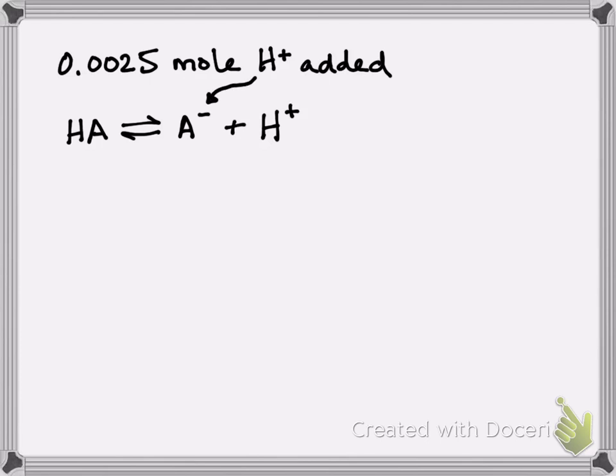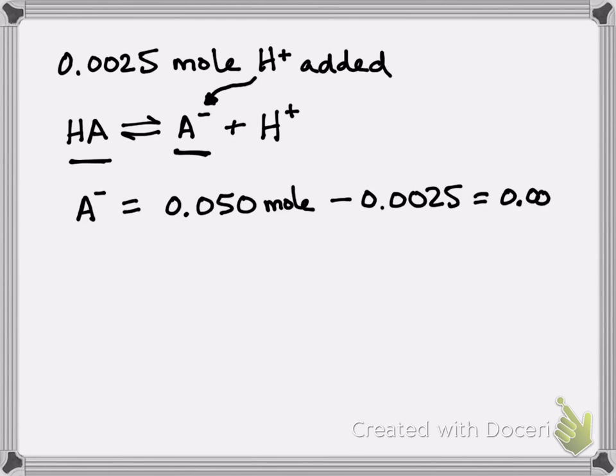So what effect is this going to have on the weak acid conjugate base system? Those protons that you added are going to convert some of this conjugate base to the acid form. So remember, this is going to be a mole-to-mole relationship. So 0.0025 moles of protons are going to react with an equal molar amount of the conjugate base. So you initially started off with 0.050 mole of the conjugate base, and some of that is going to get converted. The amount that gets converted is 0.0025. And what you're left with of conjugate base left over is 0.0475.